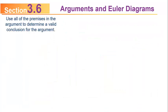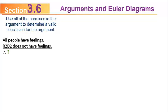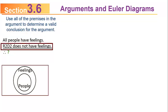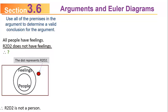Using all premises to determine a valid conclusion: all people have feelings; R2-D2 does not have feelings; therefore, what? Starting with the first premise, the people circle must be completely inside the feeling circle. Since R2-D2 does not have feelings, R2-D2's dot is outside the feeling circle — which automatically puts it outside the people circle too. Therefore, a valid conclusion is: R2-D2 is not a person.